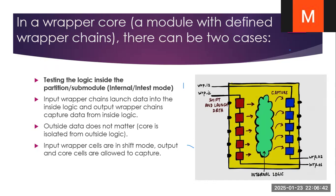In this vapor core — this is the core — these are the input vapor cells and these are the output vapor cells. We can insert a dedicated vapor cell here if no shared vapor cell is available. For that particular port we need to insert a dedicated vapor cell. These vapor cells operate in two modes: in-test mode and access mode. A vapor core is a module with defined vapor chains.